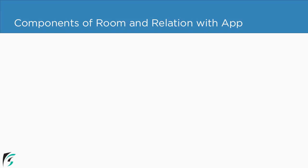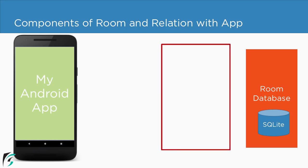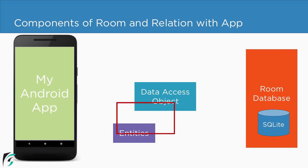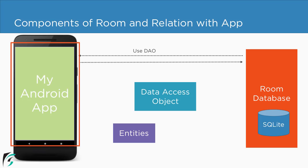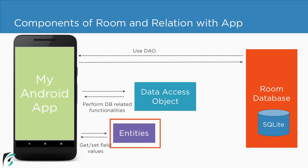Now let us understand how these components of Room work in relation with our application. Here, this is the Android application with the Android activity and the Room database. As the components of Room, we have the Data Access Object, the entities, and the SQLite database. Our Android application uses the DAO to interact with the database — to perform DB-related operations such as getting entities from the DB or persisting changes back to the database. Our application uses the entities to get or set field values. This is how the components of Room are related to our application.